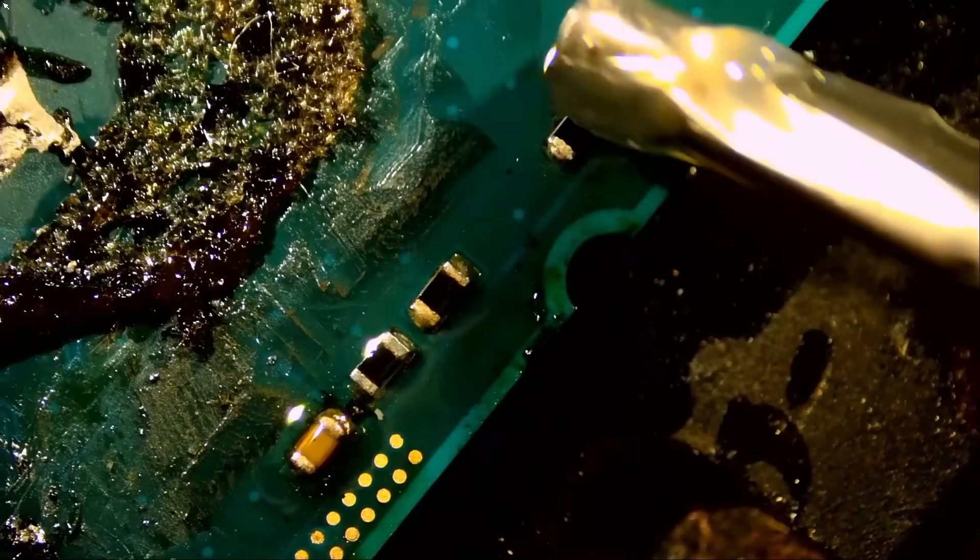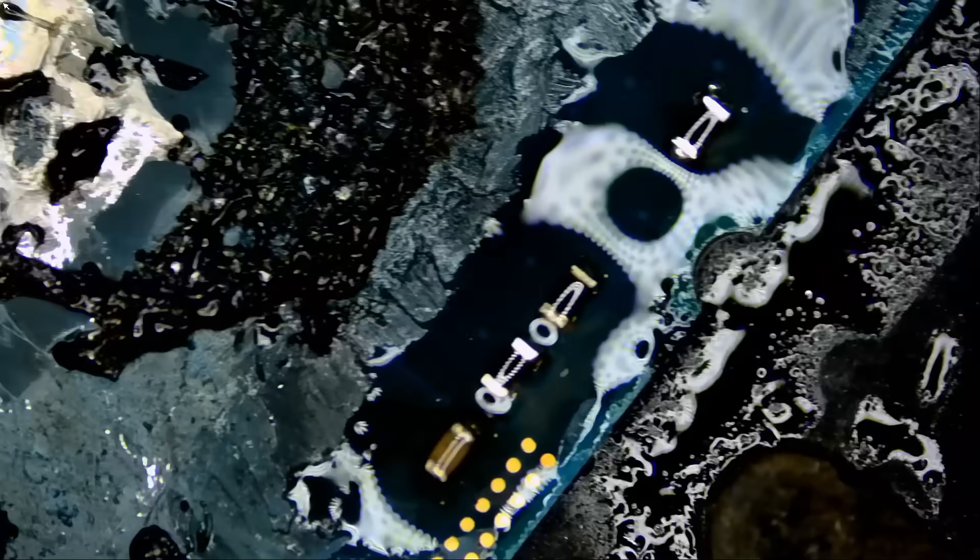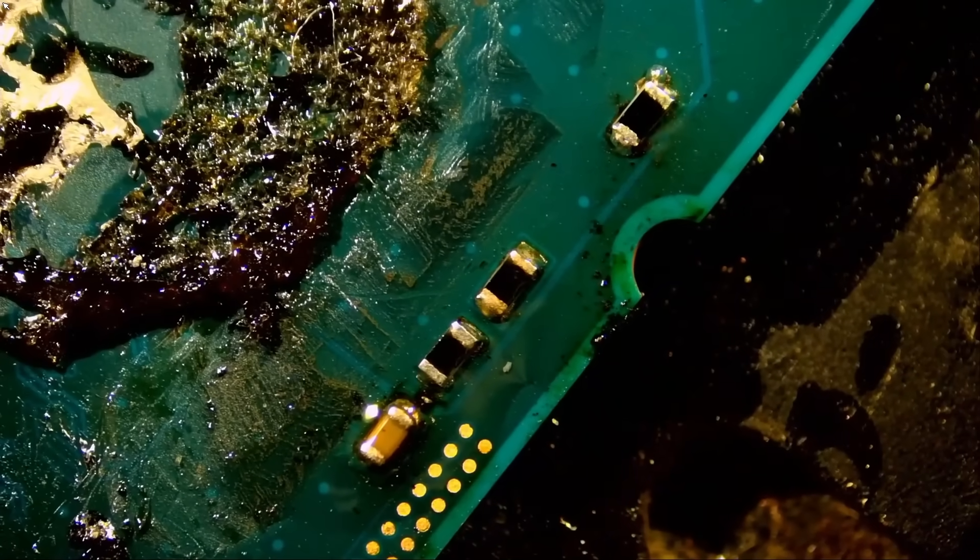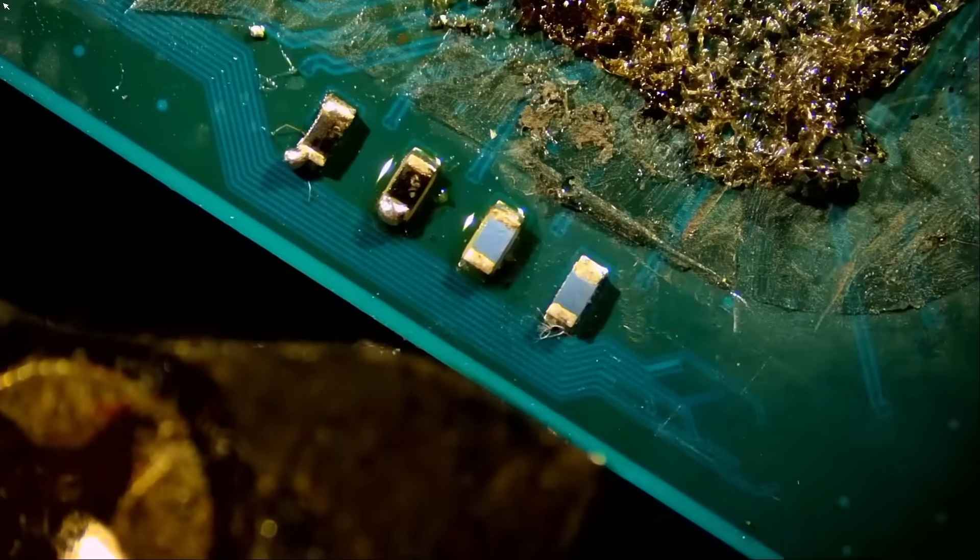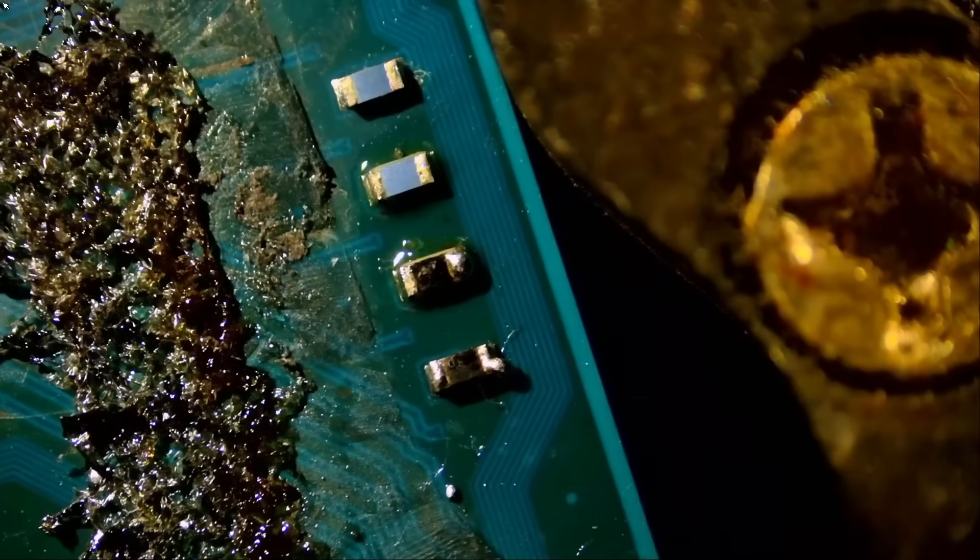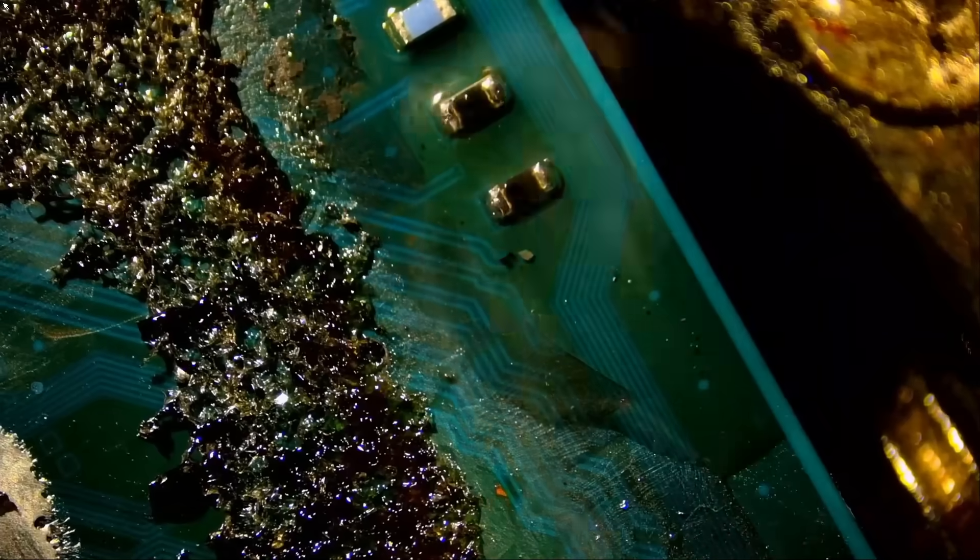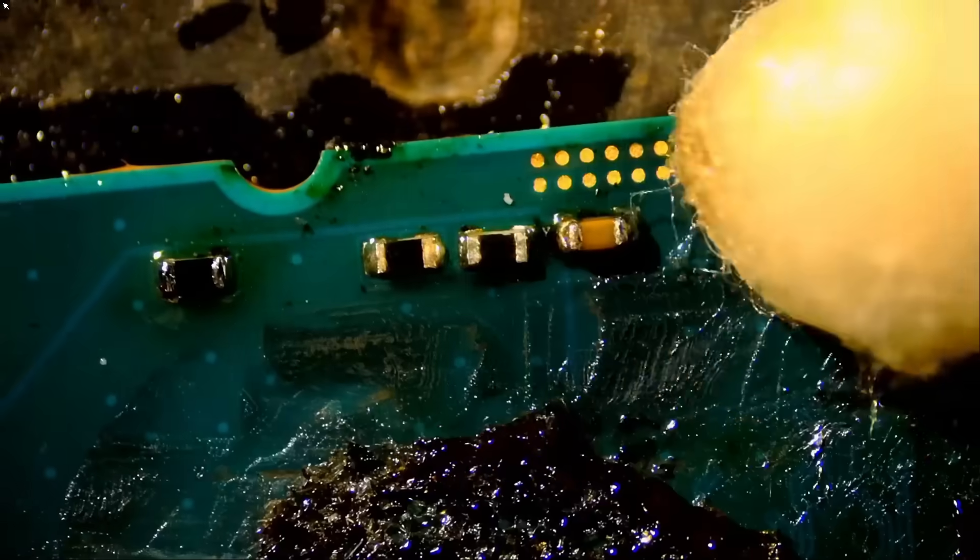Now look, with the anti-glare light we cannot even tell that we have flux on the board. Let me turn on my ring light. That's how it looks like under the ring light. Back to anti-glare. Magic. Beautiful. What more do you want? Now the customer can clean the rest of the mess on this CPU. I'm not going to remove this for him, and I'm not going to remove liquid metal for him. He can clean it by himself.